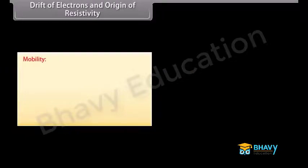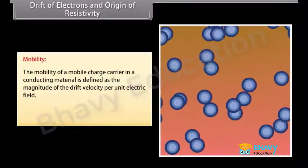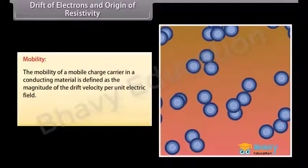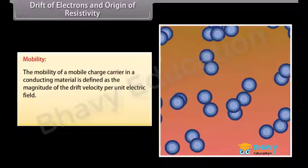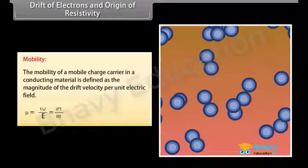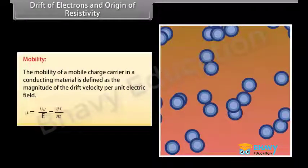The mobility of a mobile charge carrier in a conducting material is defined as the magnitude of the drift velocity per unit electric field. Mobility mu equals Vd upon E, which equals e tau upon m.